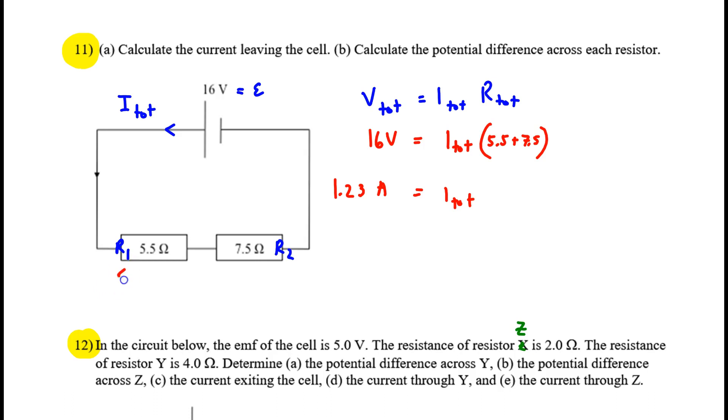Part B, find the potential difference across each resistor. V1 and V2. Now, we know the current, so we could use I times R. After all, if 1.23 amps exits this battery, it will all go through the first resistor, it will all go through the second resistor. So it's the same current value for the entire problem. But instead of using V equals IR, we could instead use the potential divider equation.